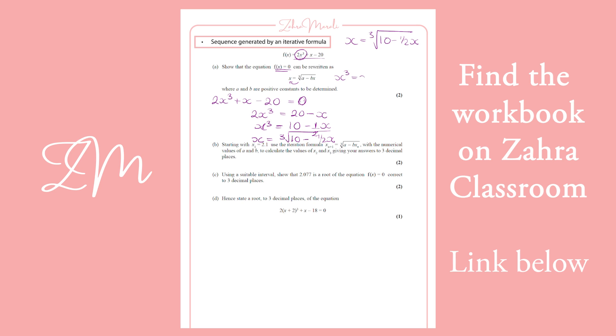You could have cubed it, moved everything to one side, plus bx minus a equals 0, and then worked out how that connects to your fx. So that's another way to do it.